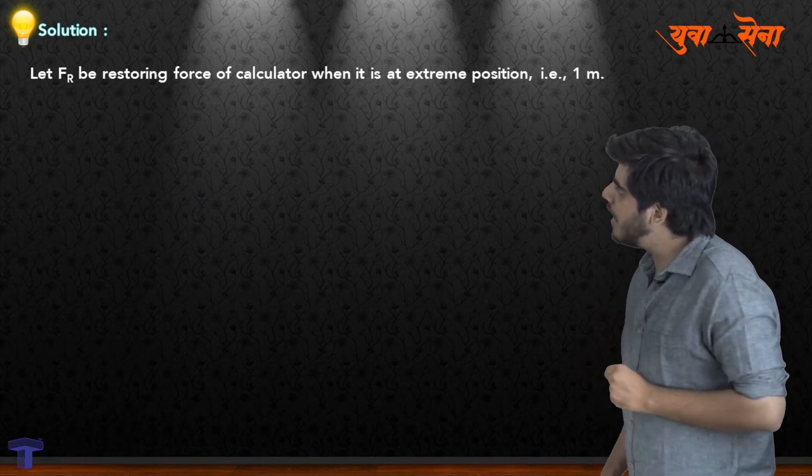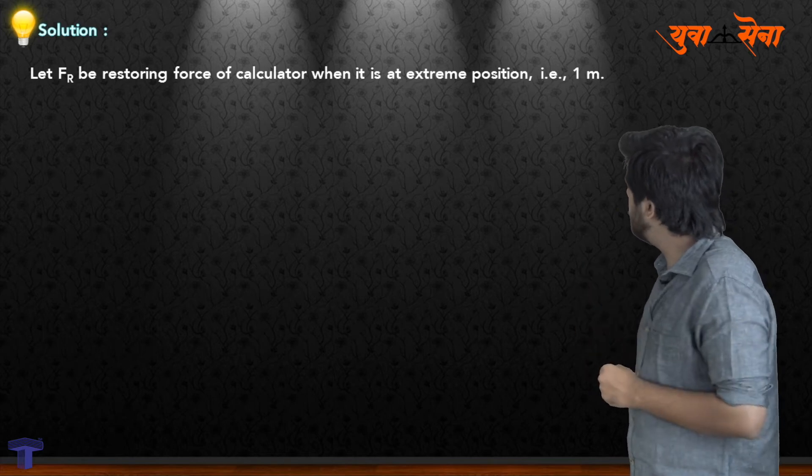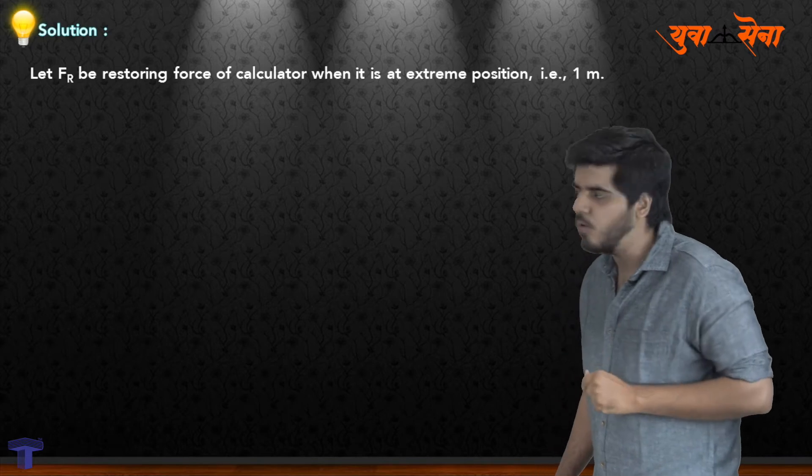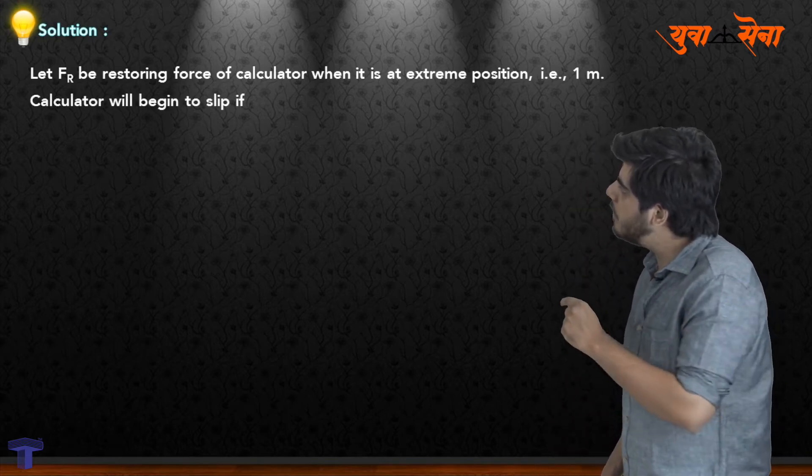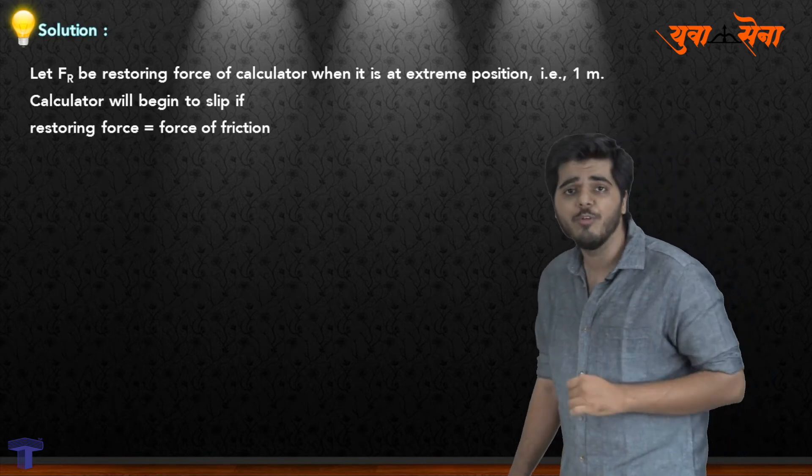Let F_R be the restoring force of the calculator when it is at the extreme position, that is 1 meter. We have converted 100 centimeters to 1 meter. The calculator will begin to slip if the restoring force equals the force of friction.